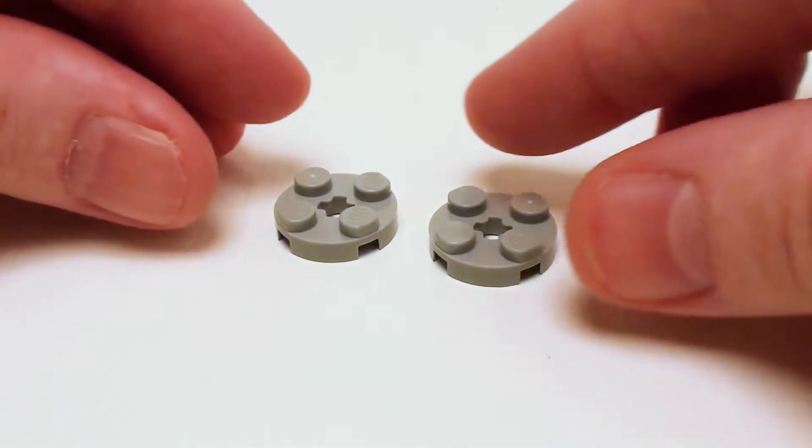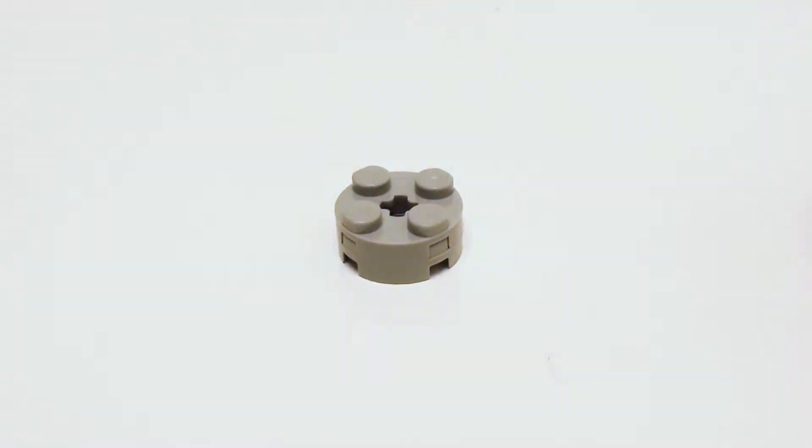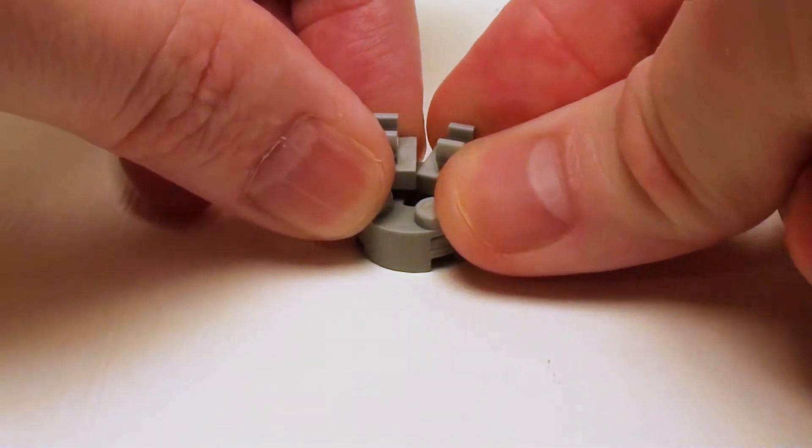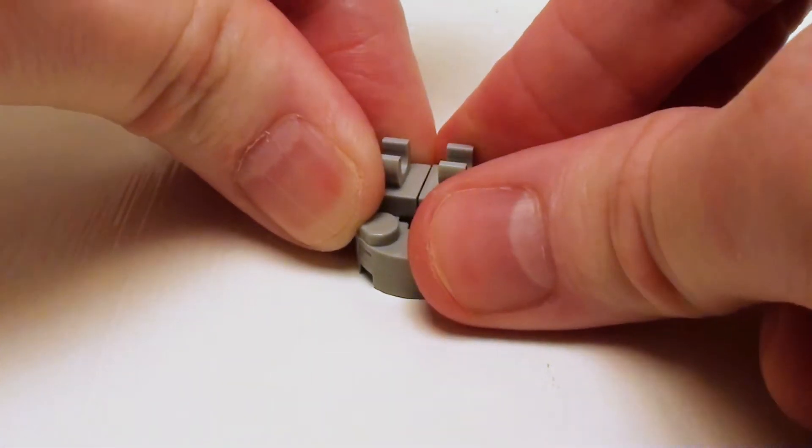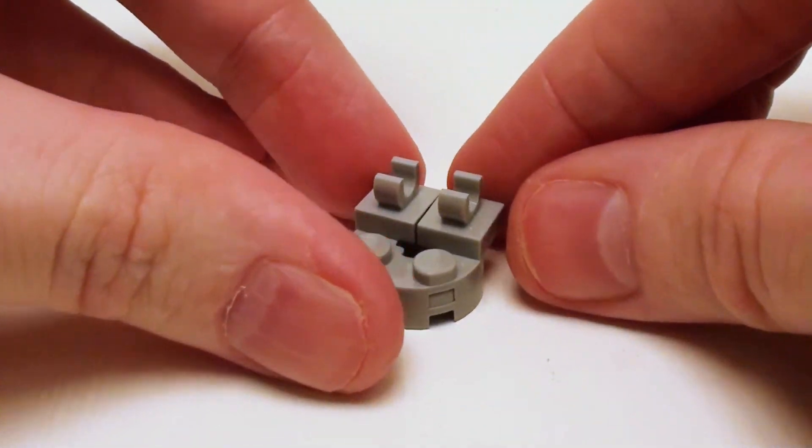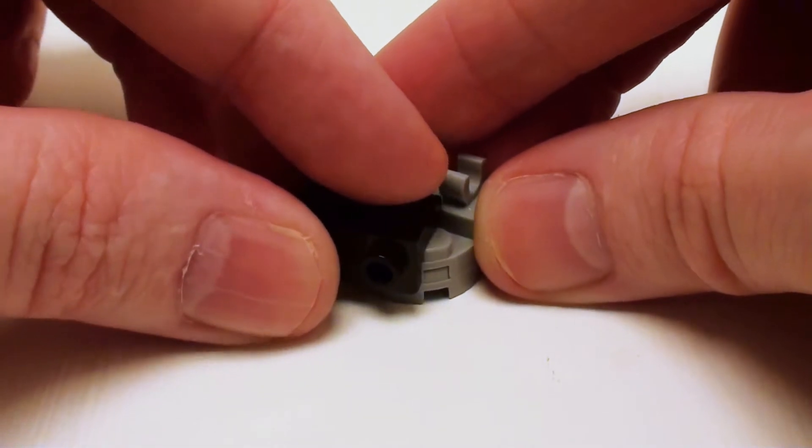For the barber's chair, let's take a pair of 2 by 2 round plates, place them on top of one another, and set down two 1 by 1 plates with vertical holder or top holder. And in this area, a 1 by 2 by 1 by 2 downwards angular plate.